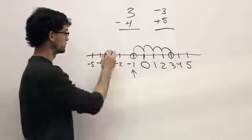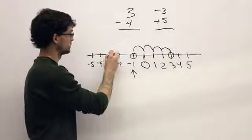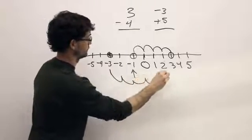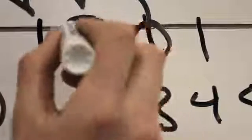You can then start with negative three and add five to find your answer at two.